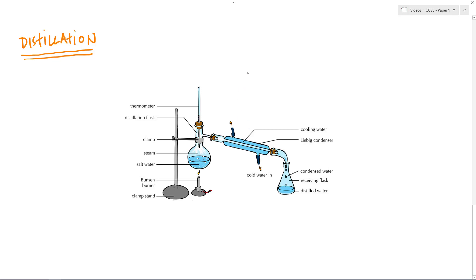This method of separating salt water is called desalination. Although it's a very expensive method because of the heat involved, some countries - possibly in the Middle East - use it to produce drinking water from sea water, which you can't drink as-is because of the salt content. By heating the salt water you evaporate the water, then collect it - very similar to crystallisation but rather than the water evaporating into the atmosphere, you condense it back down, collect it, and then drink it.